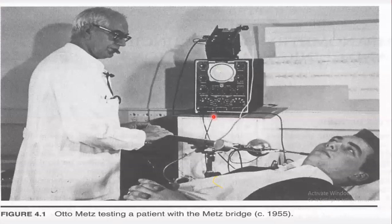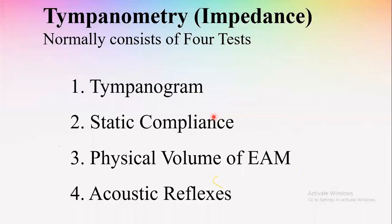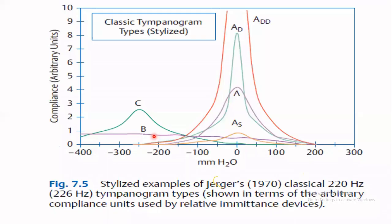If we want to measure tympanometry, there are four important tests: first is the tympanogram, second is static compliance, third is physical volume of the ear canal, and fourth is acoustic reflexes.